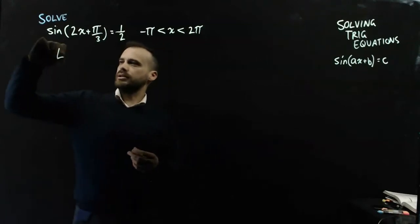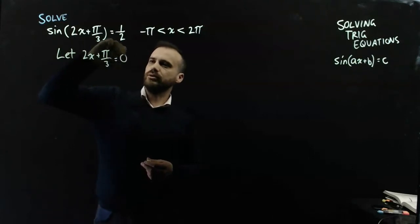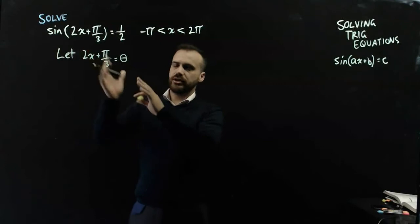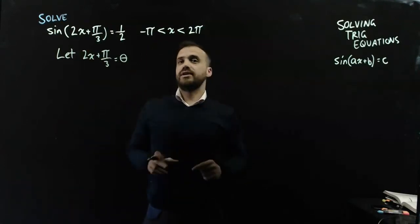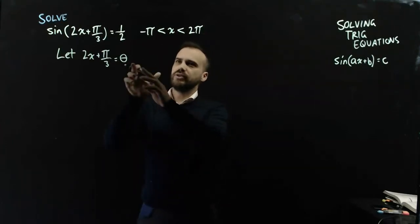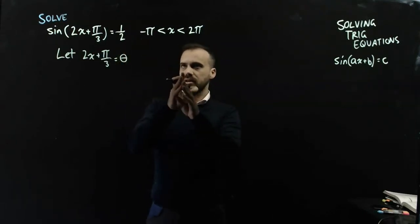As I said before, I'm going to let 2x plus pi on 3 equal theta, and that will lead to me having a much simpler equation, sine theta equals 1 half to solve. But this also affects my domain, because now I'm not going to be solving theta in the same domain as I'm solving x.